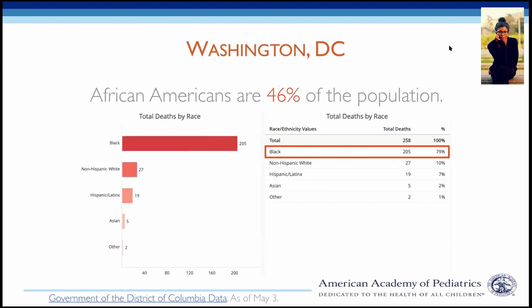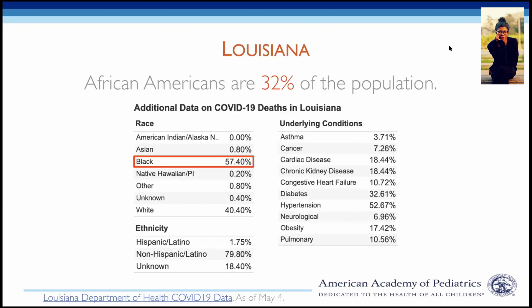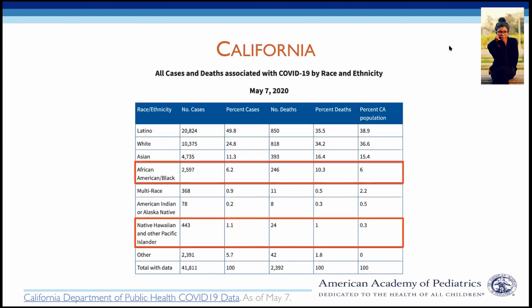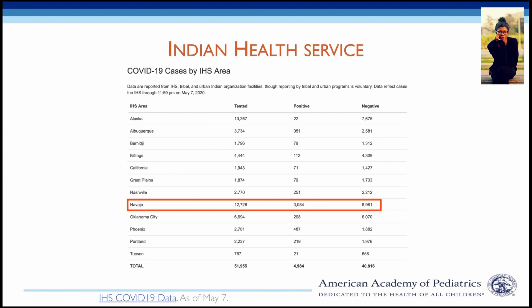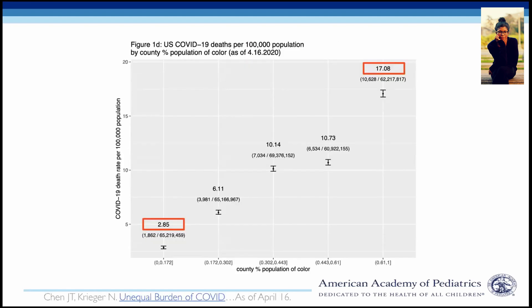These startling disparities are similar in Washington D.C., where African Americans make up 79 percent of total deaths, and in states like Michigan, Louisiana, Wisconsin, and California — where we also see a disproportionate impact on Native Hawaiian Pacific Islander populations, as well as in Utah, Washington, and Oregon. Looking at Indian Health Service data, the highest case count is among Navajo Nation. Overall, national county-level data reveal the COVID-19 death rate is six times higher in predominantly non-white areas compared to predominantly white areas.